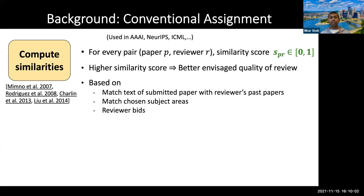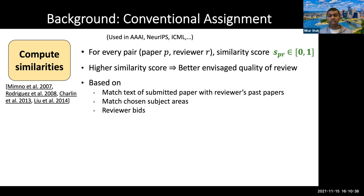In the first phase, you compute what are called similarities. For every paper-reviewer pair — say paper P and reviewer R — a similarity score S_PR is computed, a number in 0 to 1, where a higher score means a better quality of review is expected. This score is computed based on NLP techniques matching the submitted paper text with the reviewer's past papers, subject areas and keywords provided by authors and reviewers, and also reviewer bids. The similarity is set to minus infinity if there is a known conflict of interest, such as if the reviewer is an author or close collaborator.